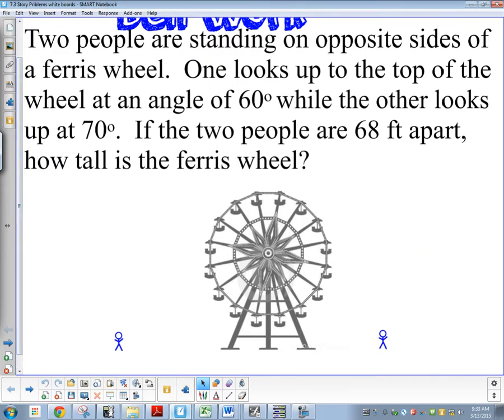It says two people are standing on opposite sides of a ferris wheel. One looks up to the top of the wheel at an angle of 60 degrees, while the other looks up at 70 degrees. If the two people are 68 feet apart, how tall is the ferris wheel?